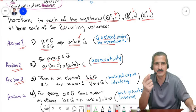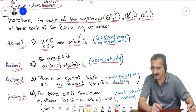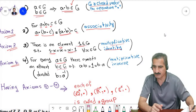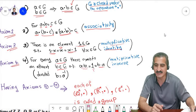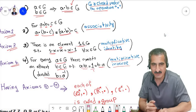Axiom 3: we must have an identity element — the element '1' — such that multiplying it by any element of G leaves that element unchanged. This is the multiplicative identity. Axiom 4: for every element a in G there exists another element b in G, called a multiplicative inverse, such that b·a = a·b = 1 (the identity). If b is the inverse of a, then a is the inverse of b.